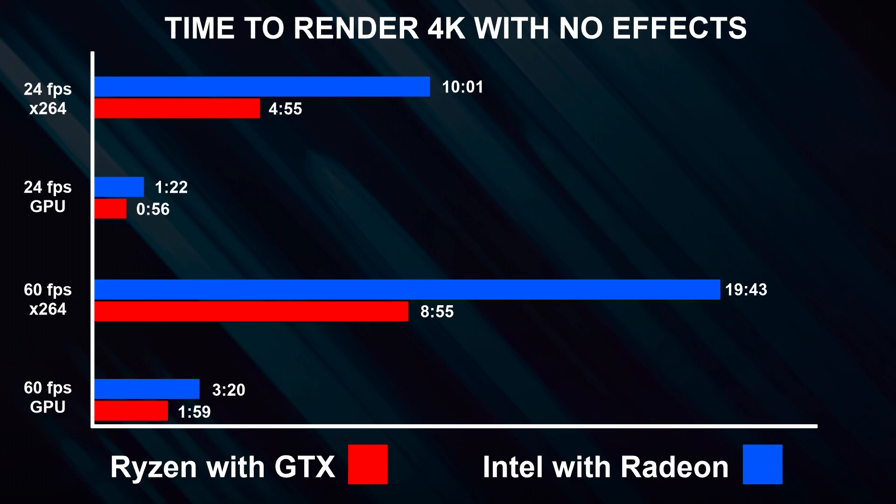The first result was 24 frames per second using just the processor, and the Ryzen beat the Intel by about twice as much. The second was 24 frames per second using the graphics card to render. The third was 60 frames per second using just the processors, and the fourth was 60 frames per second using just the graphics cards. The Ryzen with the GTX beat the Intel in every category, but when rendering with the graphics cards they were actually really, really close.